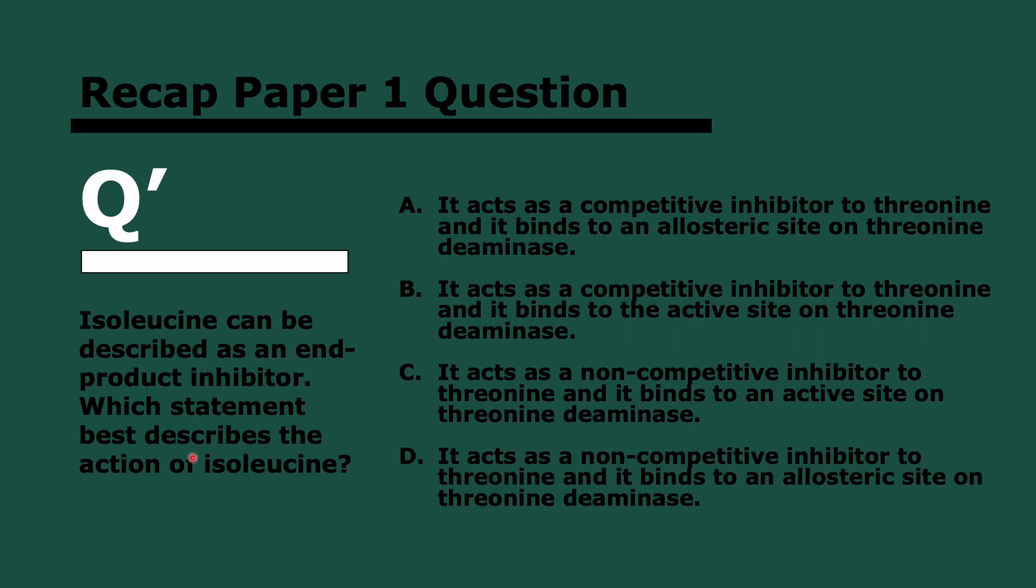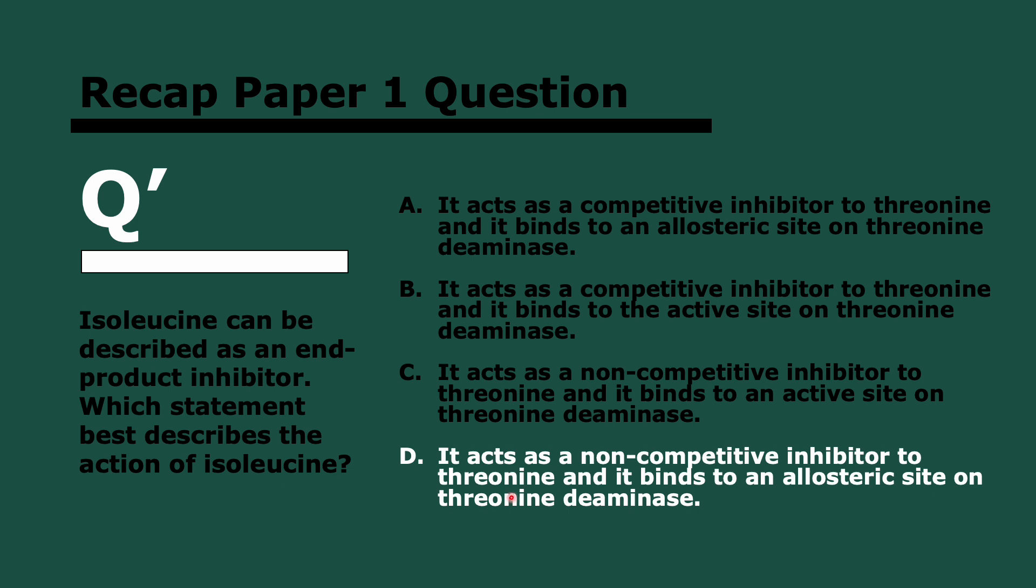Next question. Isoleucine can be described as an end product inhibitor, which statement best describes the action of isoleucine? So here we'll see if you paid attention. Pause now. And in three, two, and one. So it's a non-competitive inhibitor. Because we mentioned that it binds to an allosteric site on threonine deaminase and it inhibits threonine. I think that's pretty self-explanatory. Just go back if you don't remember.